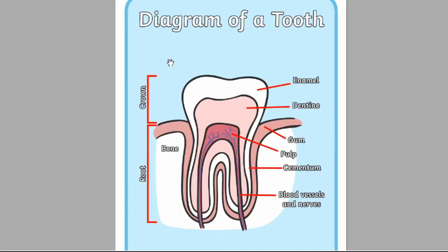Looking at this diagram now, the crown is the part of the tooth above the gum that you can see. The part of the tooth hidden under the gum is called the root. Each tooth is coated in enamel, which is the shiny white surface of the tooth. Enamel is the hardest substance in the human body. Inside the enamel is the dentine, which is a hard substance that protects the inside of the tooth. Then there's the pulp, which is the part of the tooth that contains the blood vessels and nerves. The blood vessels keep the tooth alive.